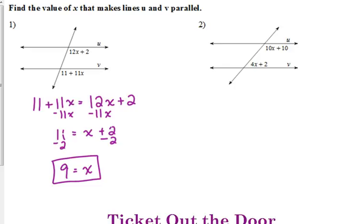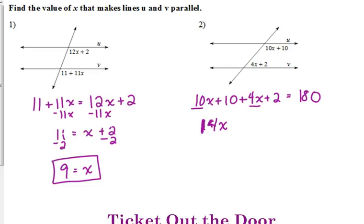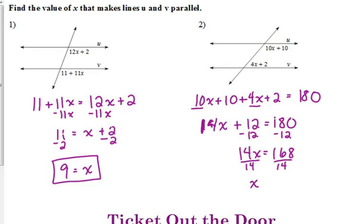Example two: we would have to add them together and they'd have to equal 180, because they look like same side interior angles. Combine like terms: 10x plus 4x is 14x, 10 plus 2 is 12. So 14x plus 12 equals 180, 14x equals 168, divide by 14, x equals 12. If x is 12, those two angles added together equal 180, which means they are same side interior angles, which means those two lines are parallel.